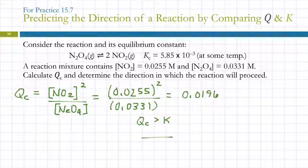So here we have QC larger than K, so the reaction will go to the left towards the reactants.